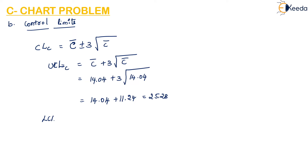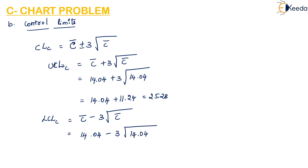The Lower Control Limit is given by C-bar minus 3 into root of C-bar. That is 14.04 minus 3 into root of 14.04, which gives us 14.04 minus 11.24, equal to 2.80.